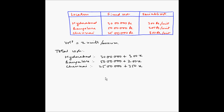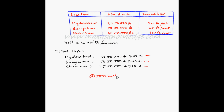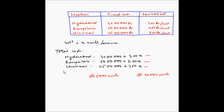Now we have to find the range of annual sales volume for which each location is the most suitable. Let us draw a graph between total cost and production volume. In order to plot the graph, we need at least two points for each location. Let us take volumes at 5,000 units and at 20,000 units and find out the total cost values for each of these locations.